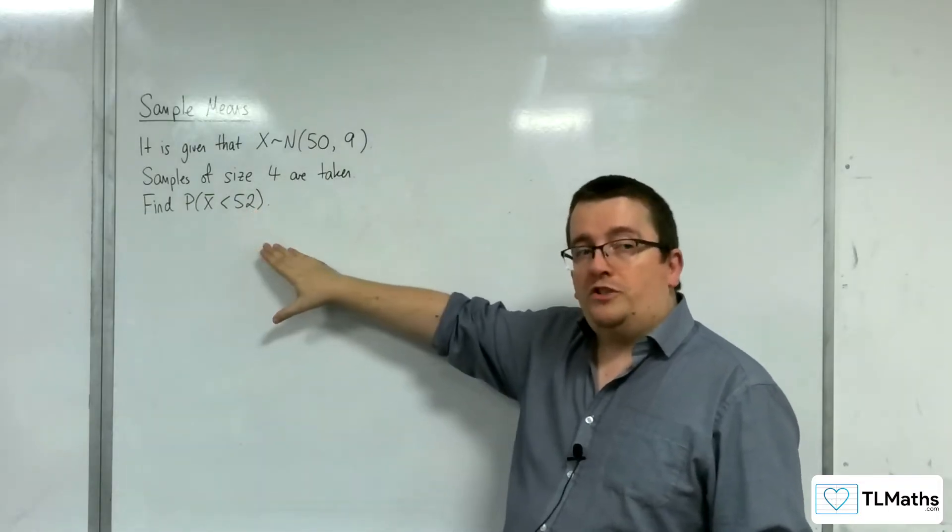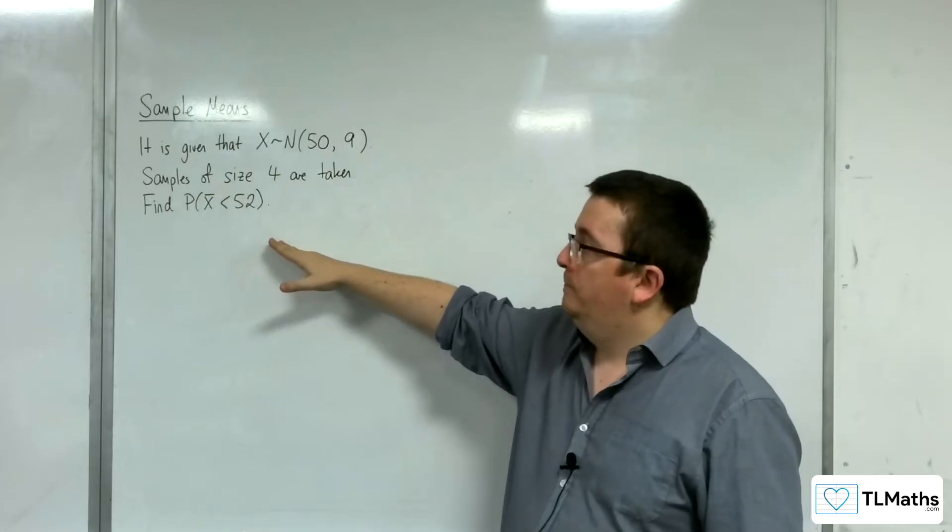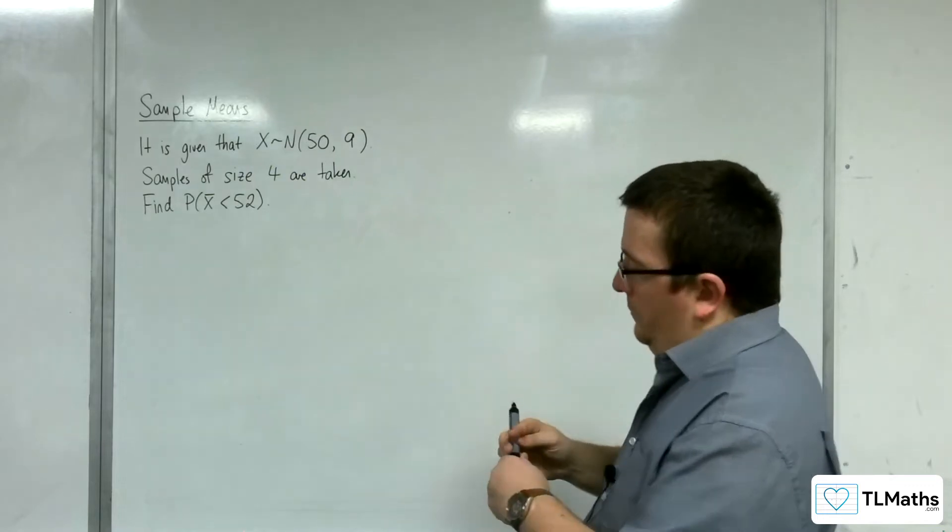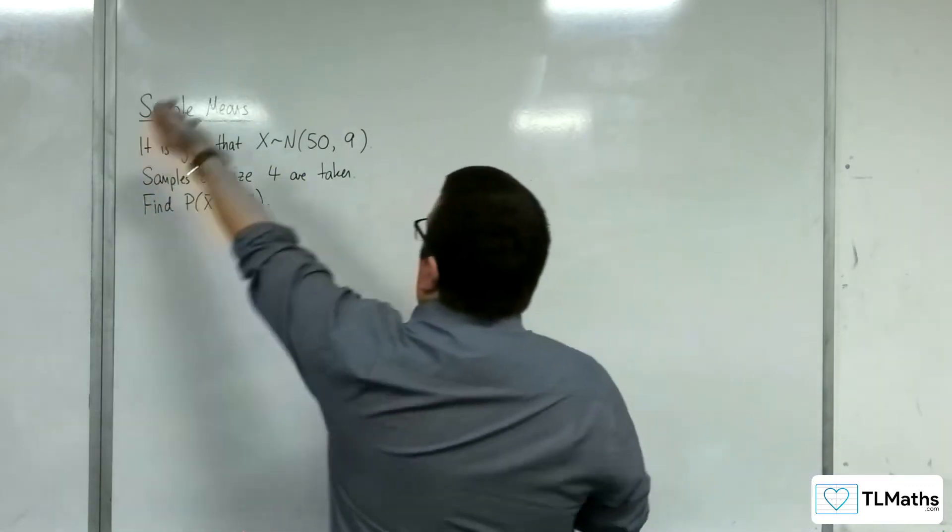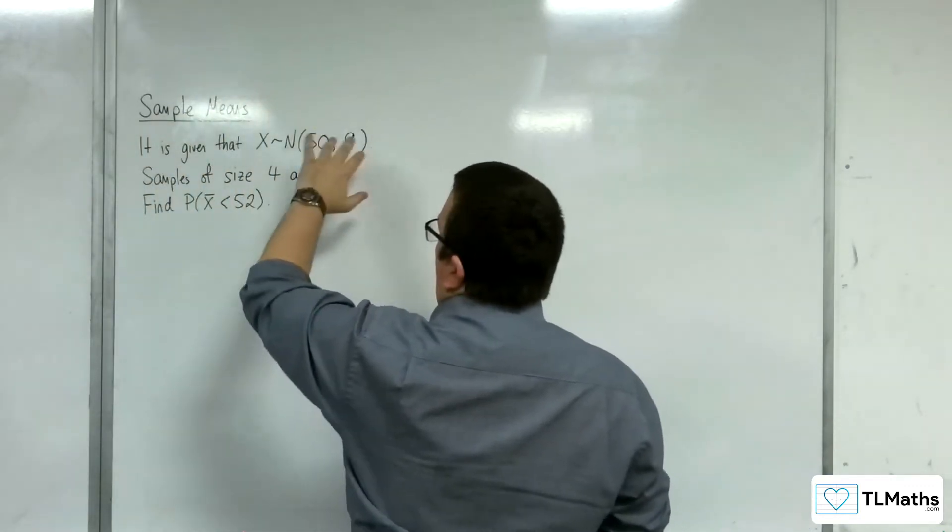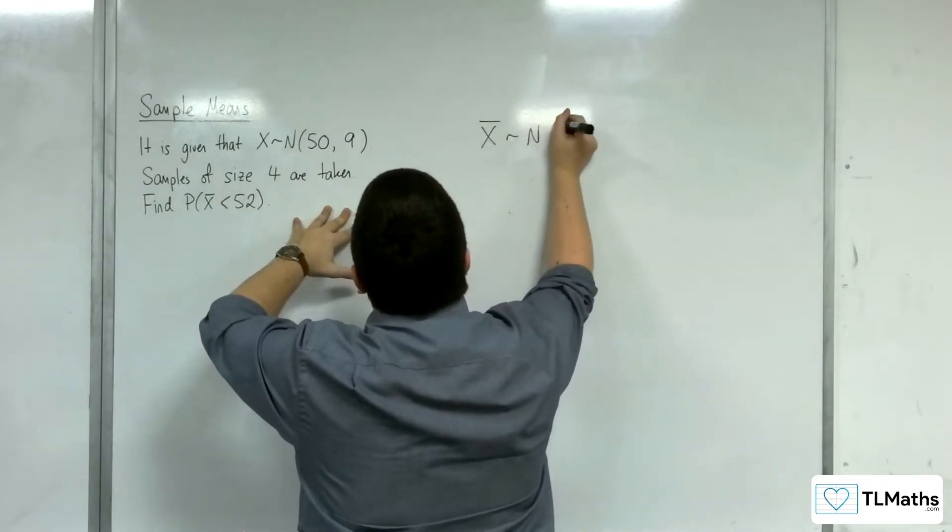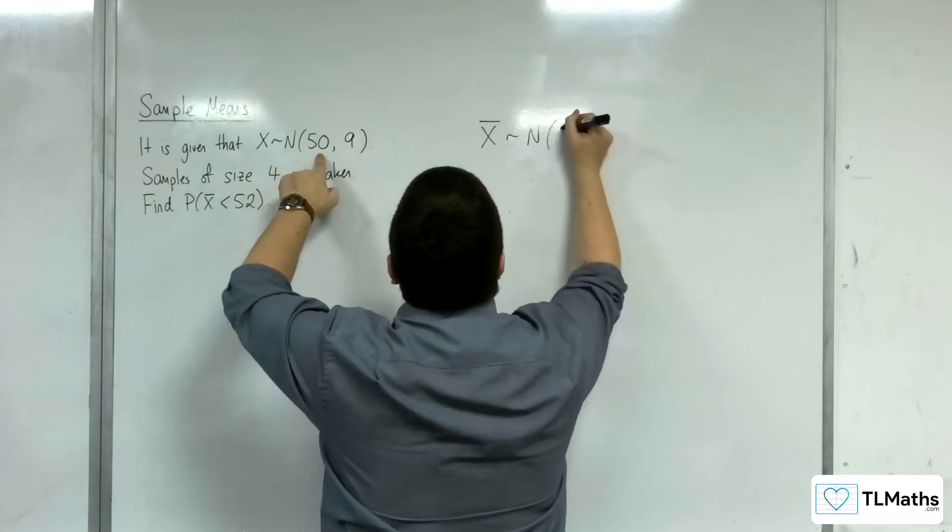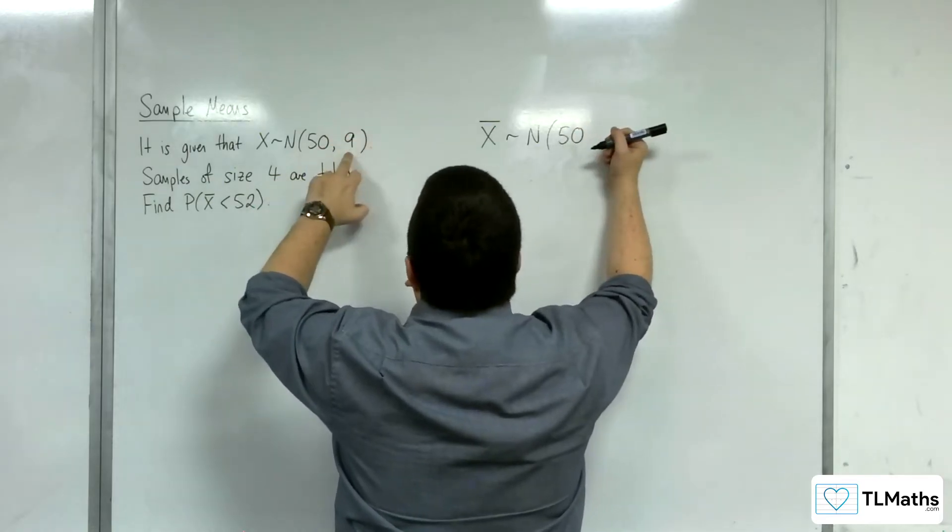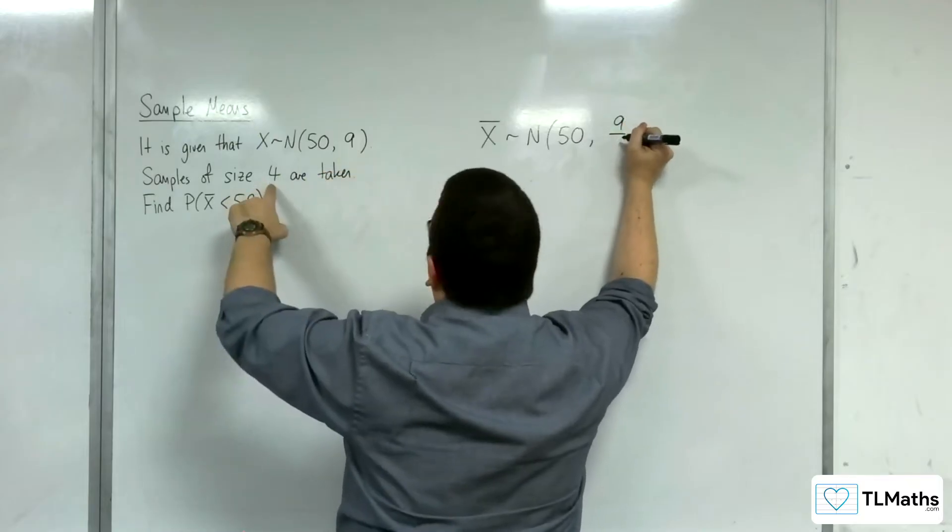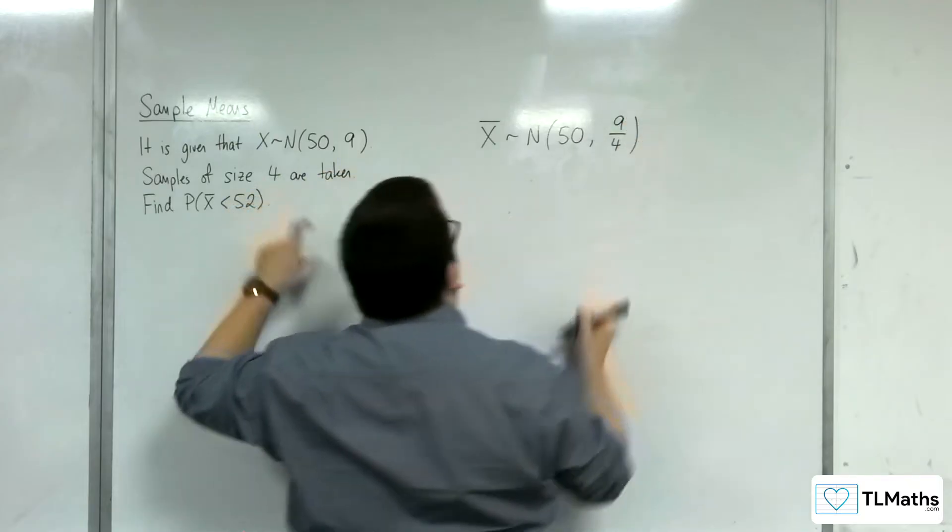That's what this question is asking. So how do we do that? So, first of all, we want to think about what will the sample mean distribution be? It's normally distributed, the mean will be the same, the variance is 9 divided by the sample size, so 9 over 4.